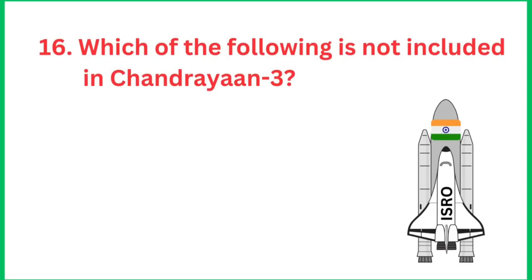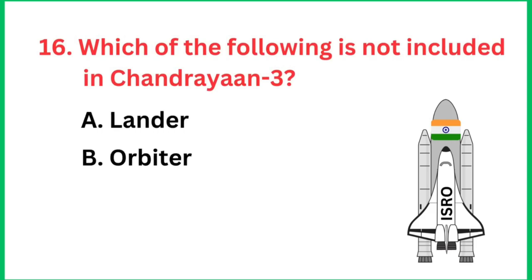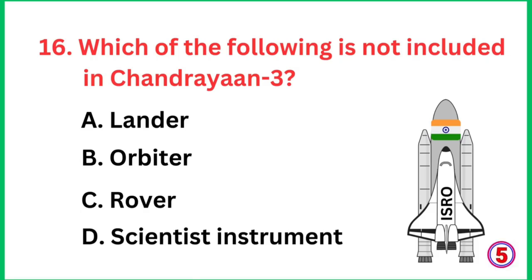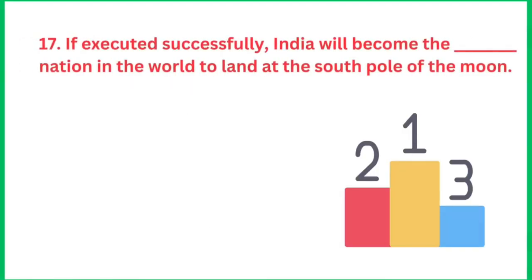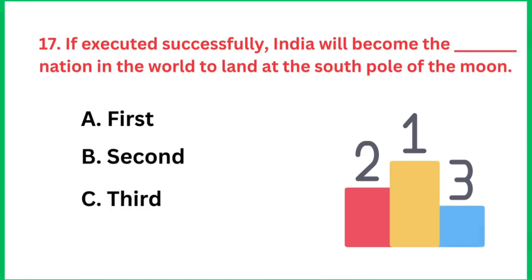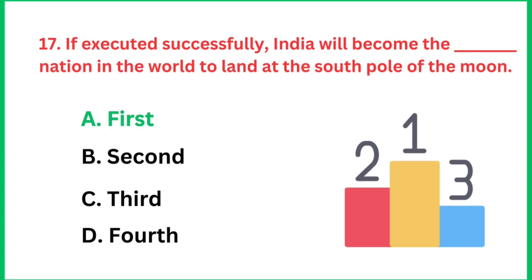Which of the following is not included in Chandrayaan 3 — lander, orbiter, rover, or scientific instruments? The correct answer is orbiter. India became the first nation in the world to land at the south pole of the moon.